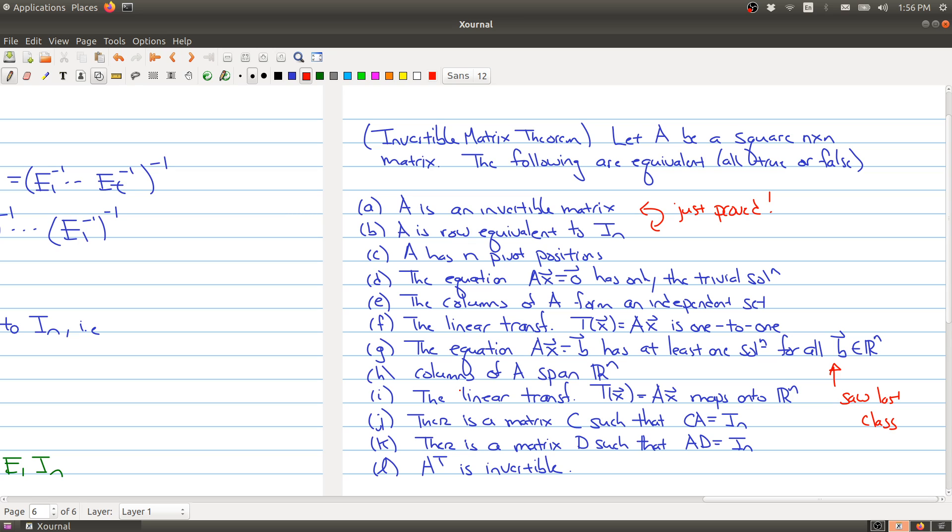The columns of A have to span all of R^n. The linear transformation not only is it one-to-one, it's also onto R^n.